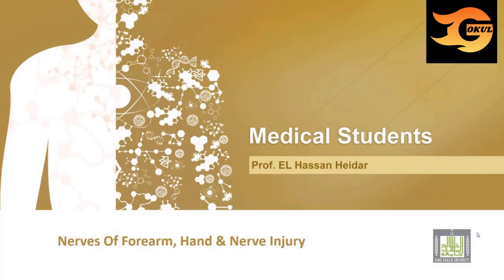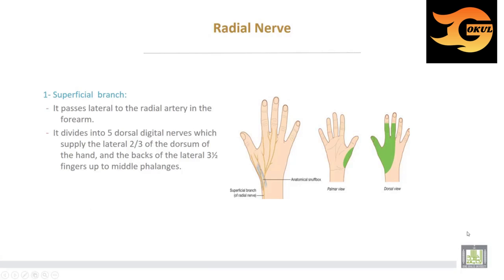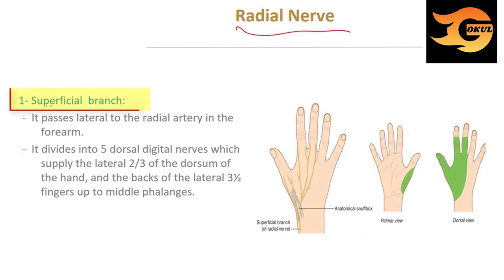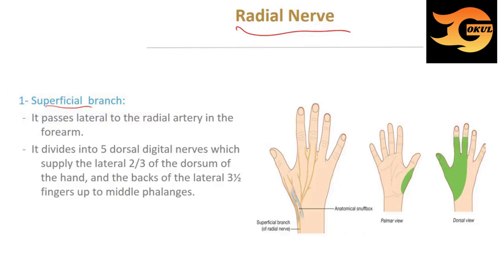Nerves of the forearm and the hand. The first nerve is the radial nerve, which has a superficial branch and a deep branch. The superficial branch passes lateral to the radial artery in the forearm. It divides into five dorsal digital nerves, supplying the lateral two-thirds of the dorsum of the hand and the back of the lateral three and a half fingers up to the middle phalanges.